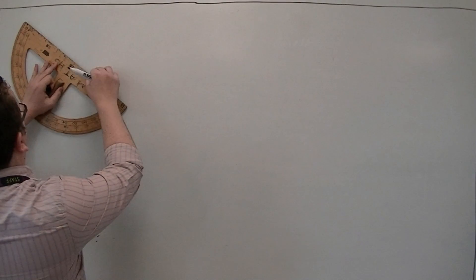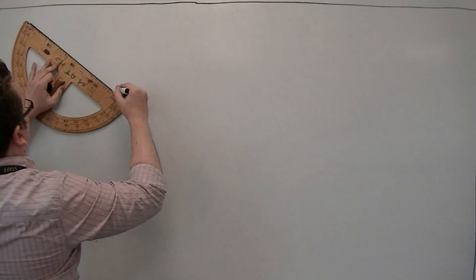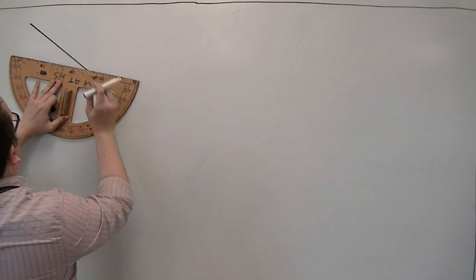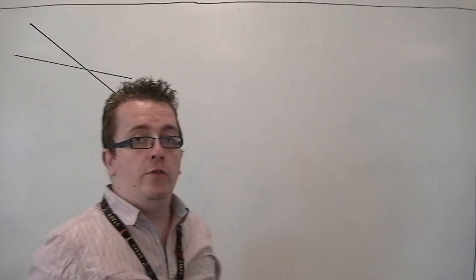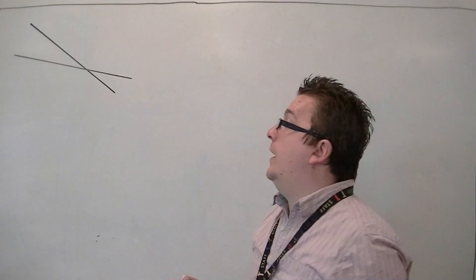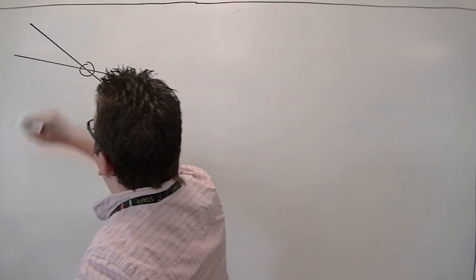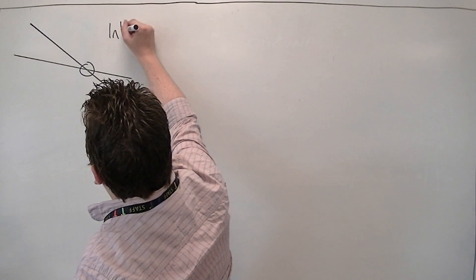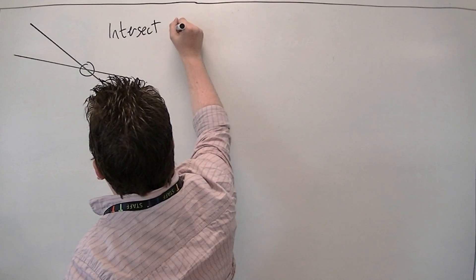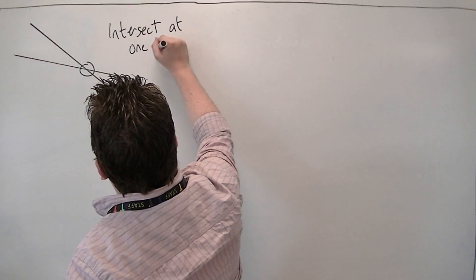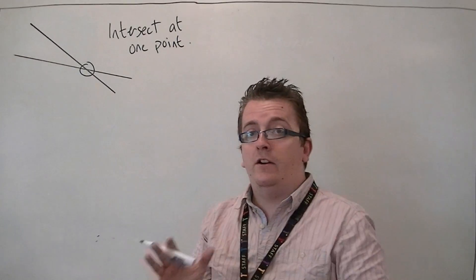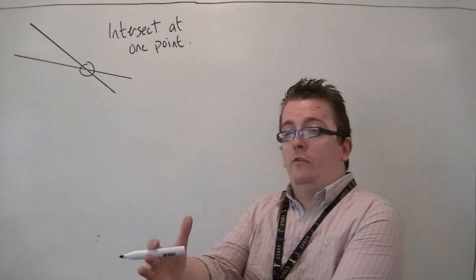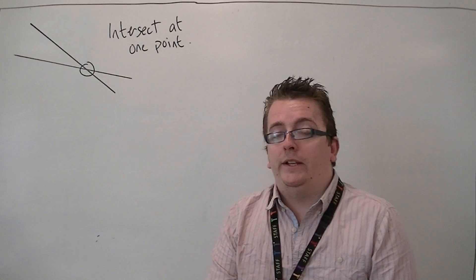You're either going to have the situation where you draw any two lines, and more than likely, if you just draw two lines and continue them far enough, they will intercept — they will intercept at one point. There is no way that you could have two straight lines going on forever and they meet twice.